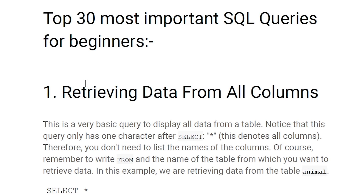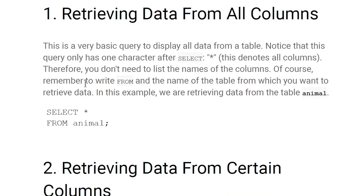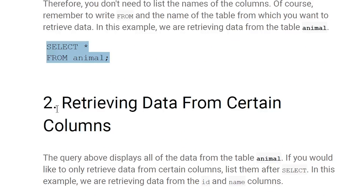Top 30 most important SQL queries for beginners. First, retrieving data from all the columns: after SELECT you have to give the star (*), and after FROM you have to give the table name. For example, SELECT * FROM animal — this will select all the columns from the animal table.